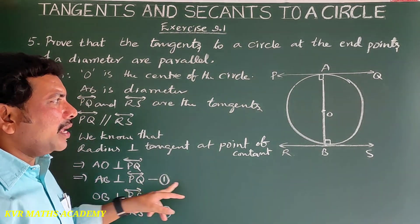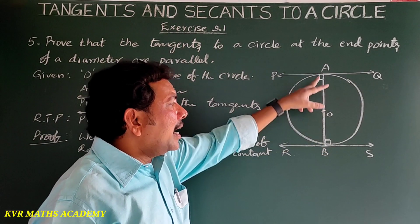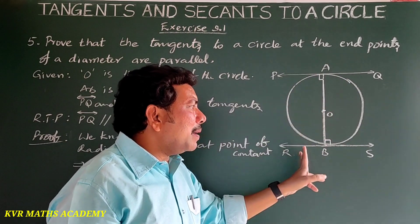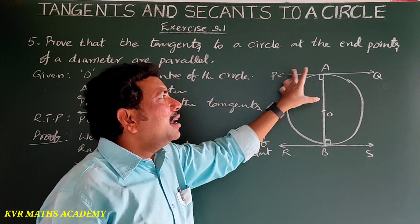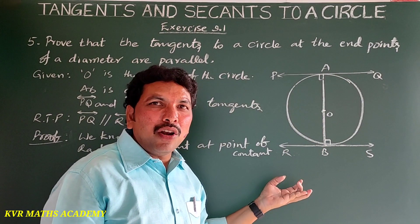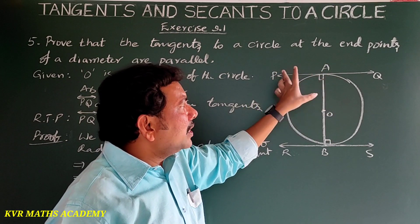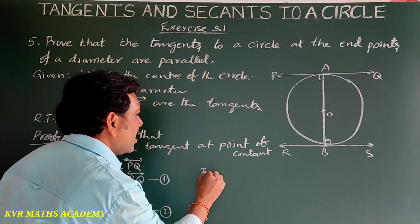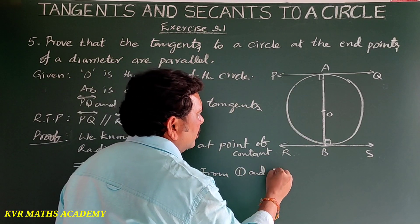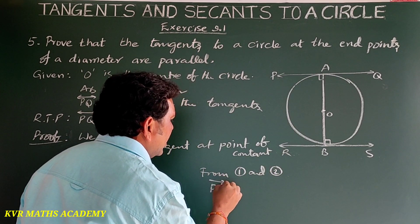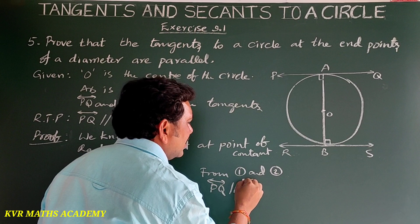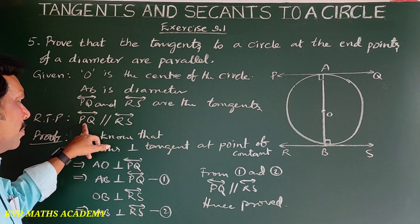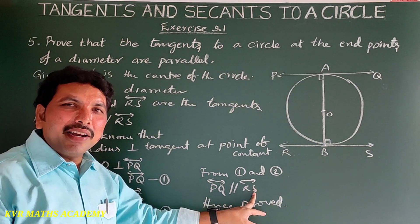From equations 1 and 2: AB is perpendicular to PQ and AB is perpendicular to RS. Since both PQ and RS are perpendicular to the same line AB, PQ is parallel to RS. Hence proved.